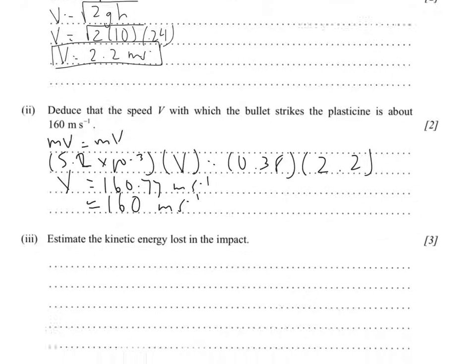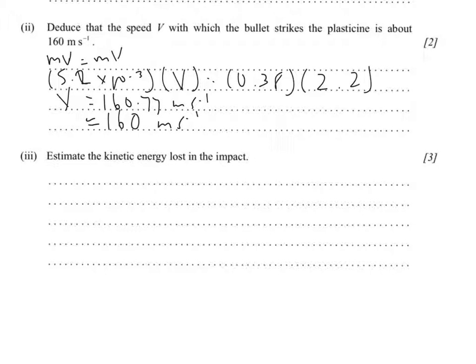And the final problem says to estimate the kinetic energy lost at impact. So the kinetic energy before is equal to 0.5 MV squared, which is equal to 0.5 times the mass of the bullet, times the velocity, which we just calculated as 160 squared. And this yields a kinetic energy of 66.567 joules.